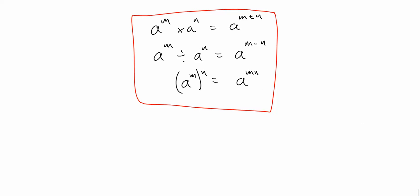So we have 3 rules for indices which you should learn and need to know. The multiplication rule: a to the m times a to the n is a to the m plus n. The division rule: a to the m divided by a to the n is a to the m minus n. And the power rule: a to the m to the power of n is a to the m times n.